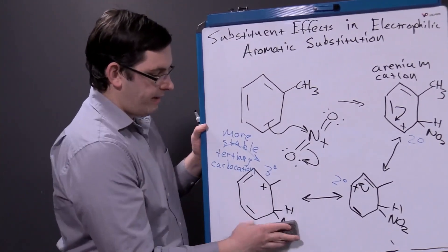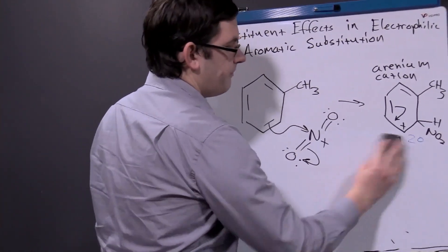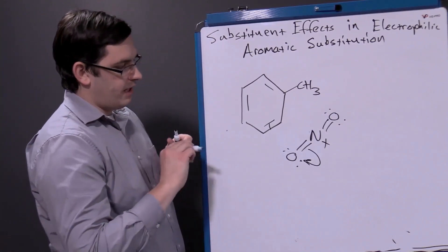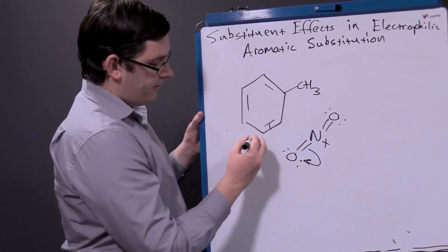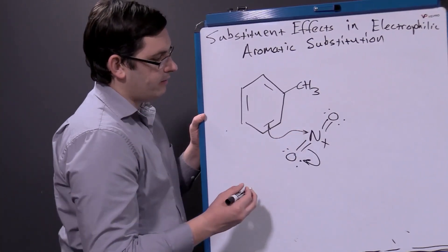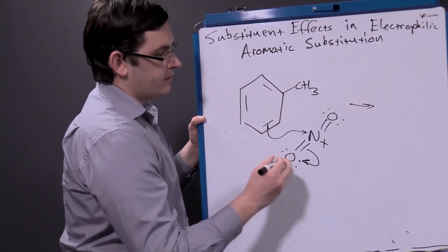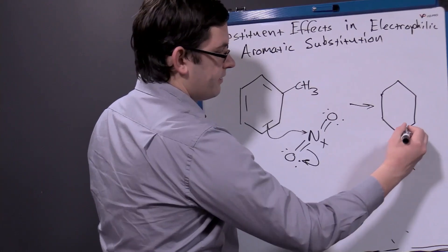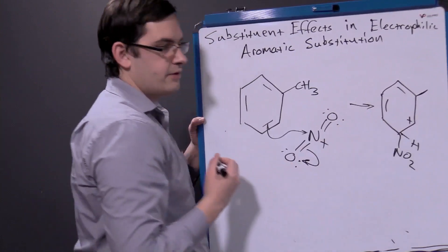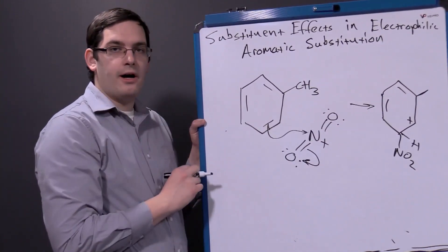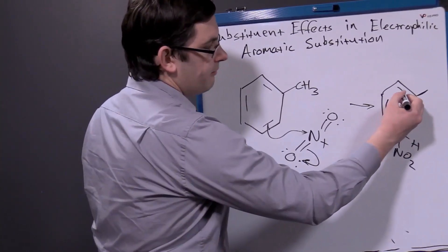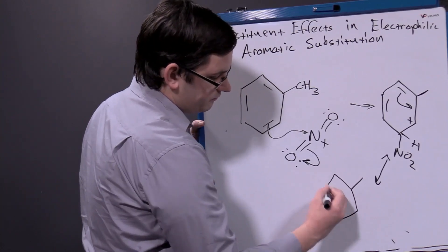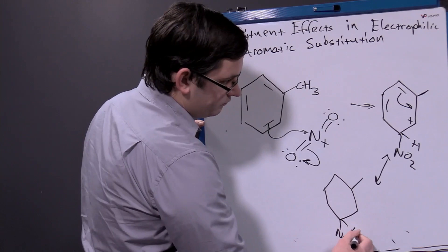Let's compare with what happens if we substitute at a meta position. We're performing the same reaction — the only thing we're changing is that this time we're going to add our nitro group at this position. So we can attack from the same location using the double bond adding onto the other carbon, placing our nitro group here. Our carbocation gets produced there. Now again, just as with our ortho reaction, we can move our double bonds and form resonance structures.